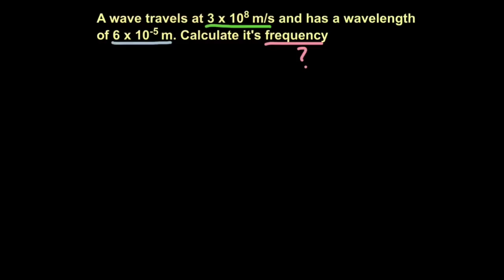So let's try one question. A wave travels at 3 times 10 to the 8 meters per second. That's 300 million meters per second. And has a wavelength of 6 times 10 to the minus 5 meters. Calculate its frequency.